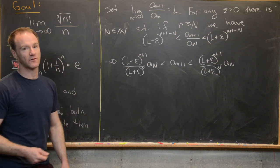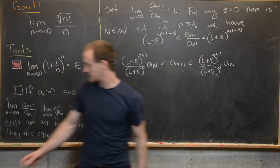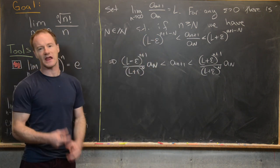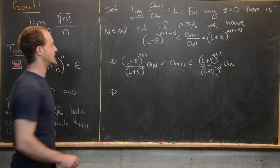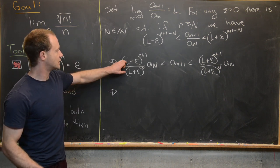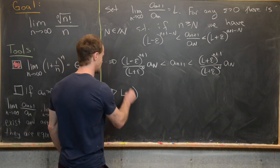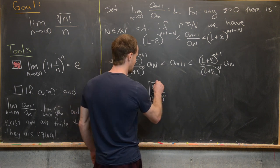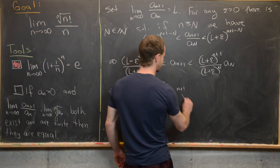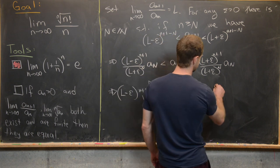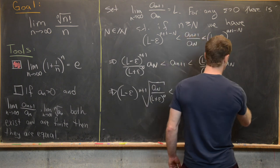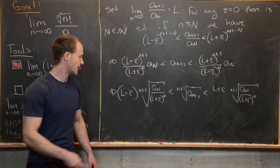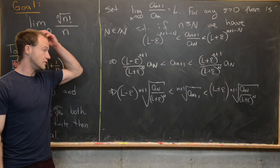Now we take the (n+1)th root of all parts of the inequality, motivated by our goal of finding the limit of the nth root of a_n. Taking the (n+1)th root gives: l minus epsilon times the (n+1)th root of a_N over (l plus epsilon)^N is less than the (n+1)th root of a_{n+1}, which is less than l plus epsilon times the (n+1)th root of a_N over (l minus epsilon)^N. Now we're ready to apply the squeeze theorem.